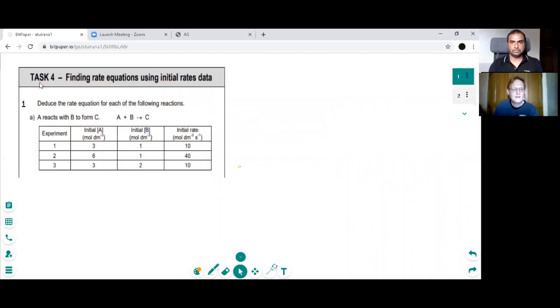I'll share my screen. And here we go, finding rate equations using initial rates data for reactants A and B. So we'll have to see how the reactants A and B affect the rate of this reaction at different concentrations.